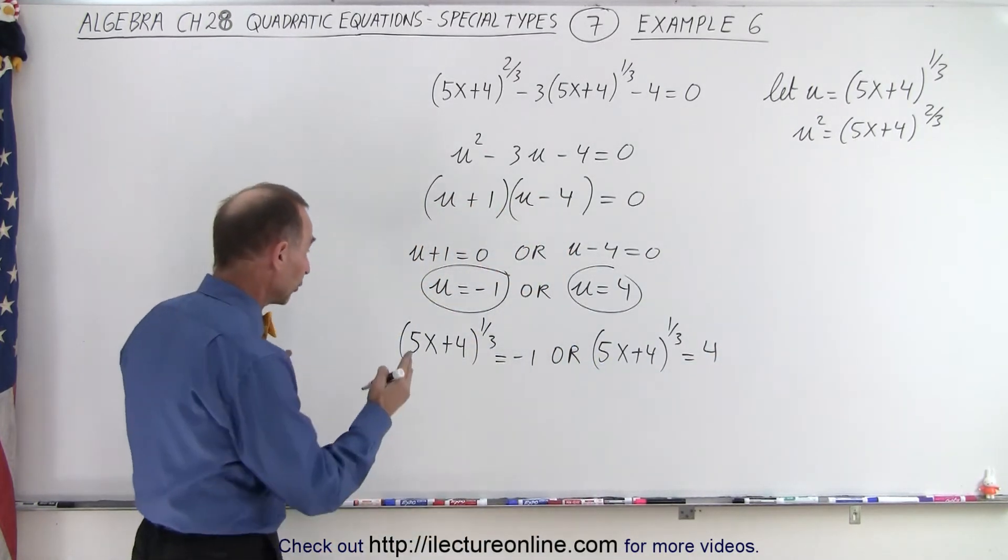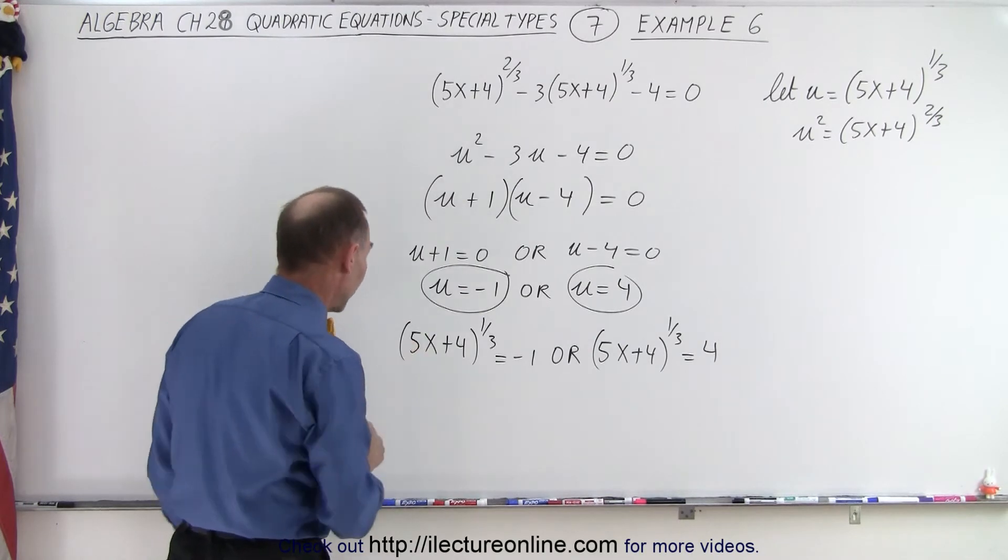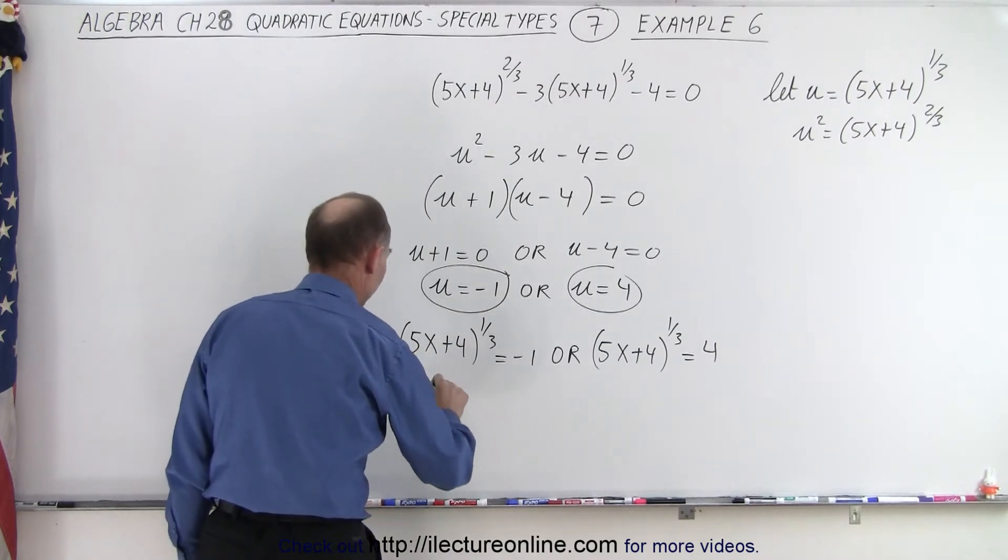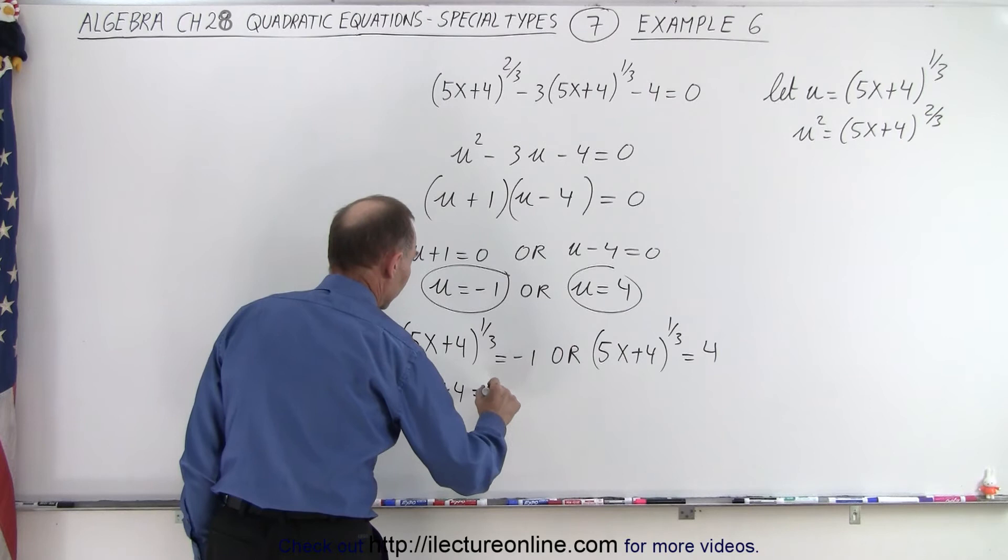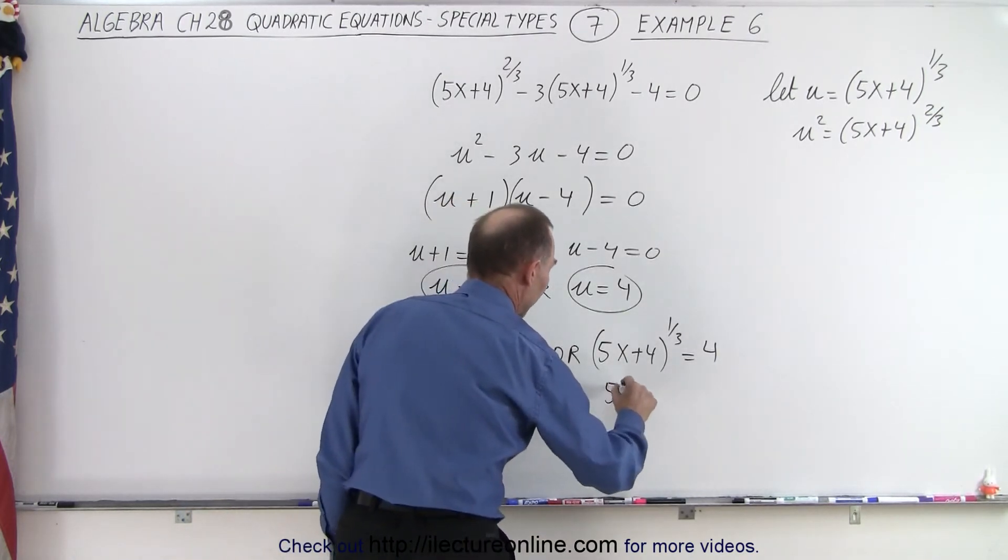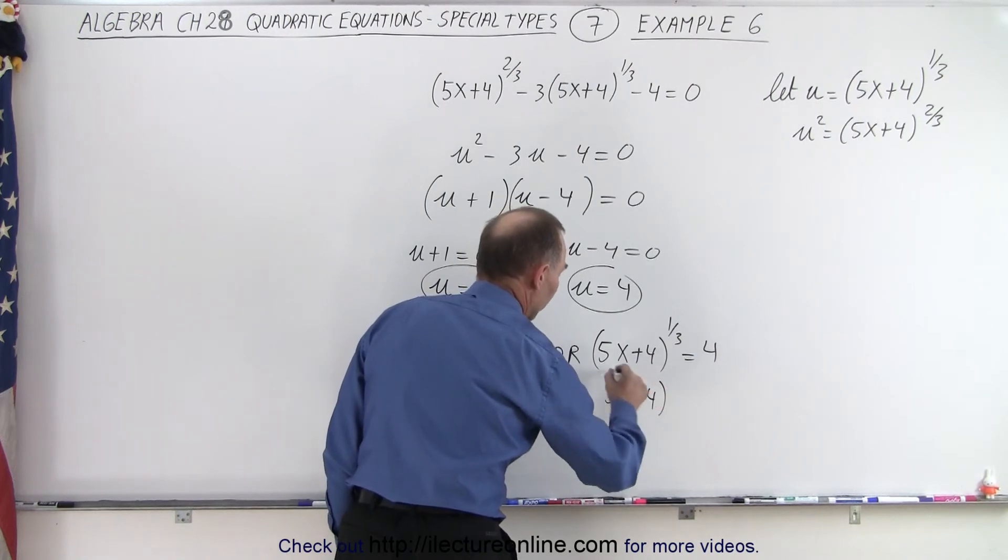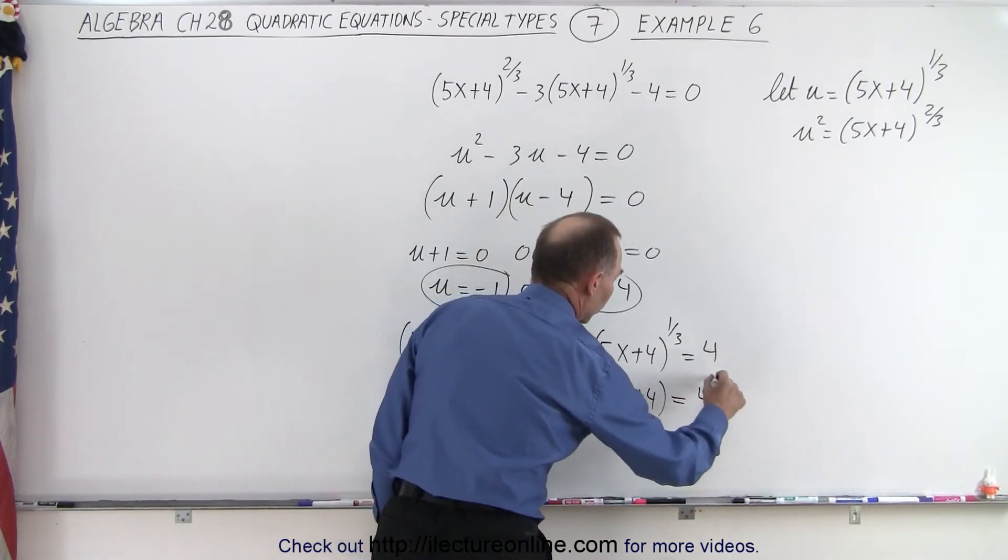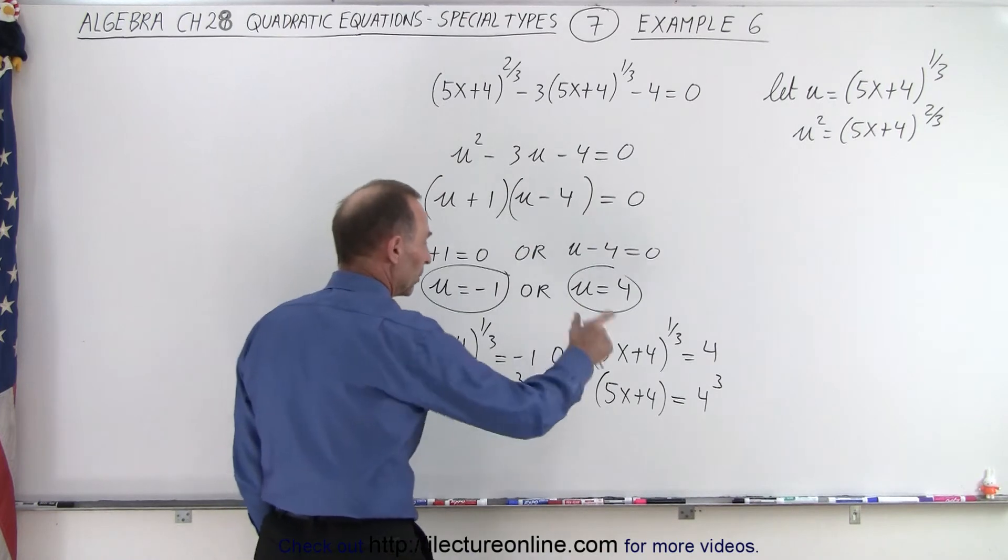Over here, that's fairly straightforward. What we're going to do here is we're going to cube both sides, which means that 5x plus 4 is equal to negative 1 cubed. And here on the other side, we're going to say that 5x plus 4 is equal to 4 cubed, because we're cubing both sides.